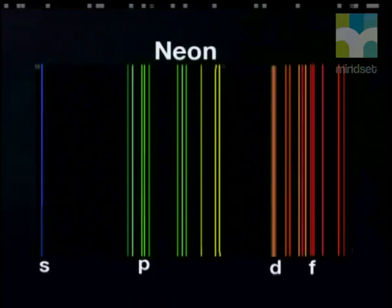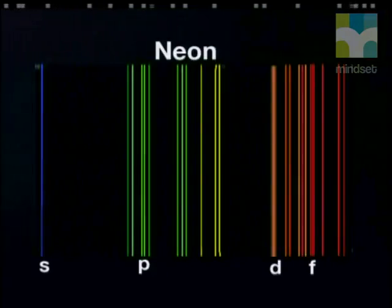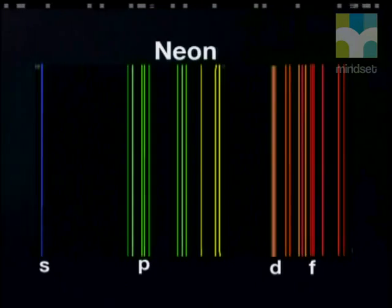They noticed that there were different types of lines in the spectra and gave these different lines names. Some lines were called sharp lines, and fatter lines were called principal lines.